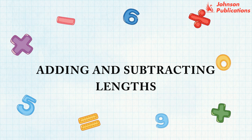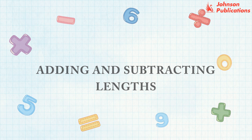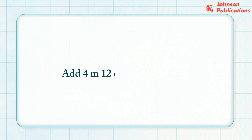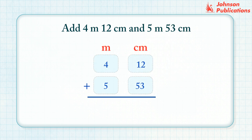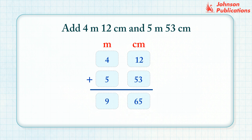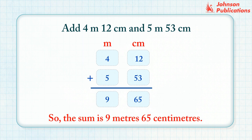Adding and subtracting lengths. Add 4 meters 12 centimeters and 5 meters 53 centimeters. Step 1: Arrange the meters and centimeters into their respective columns. Step 2: Add the centimeters column. Step 3: Add the meters column. So, the sum is 9 meters, 65 centimeters.